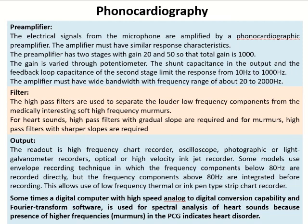To eliminate noise from the source, we use high-pass filters to separate the louder low-frequency components from the medically interesting soft high-frequency murmurs. For heart sounds, high-pass filters with a gradual slope are required, and for murmurs, high-pass filters with sharper slopes are required. The last part of phonocardiography is the output side — most commonly a chart recorder, oscilloscope, or photographic or light galvanometer recorders.